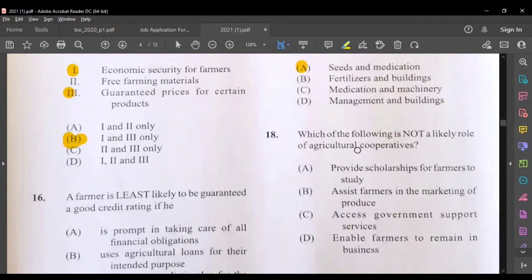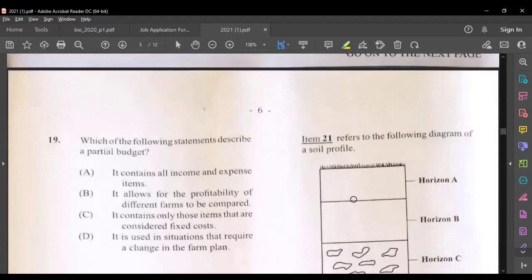Which of the following is not a likely role of agricultural cooperatives? Provide scholarships to farmers, assist farmers in marketing of produce, access government support, and enable farmers to remain in business. The most suitable answer would be A.